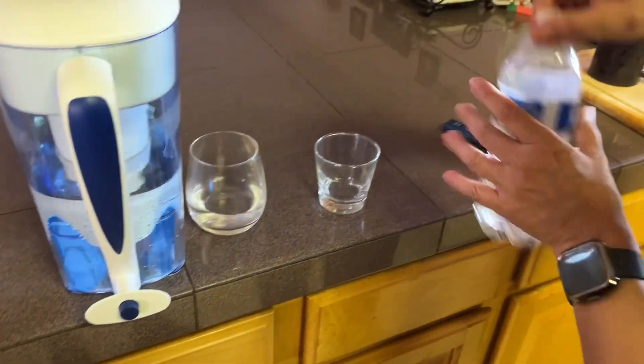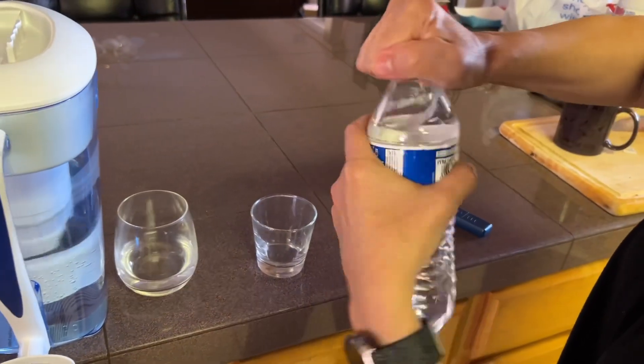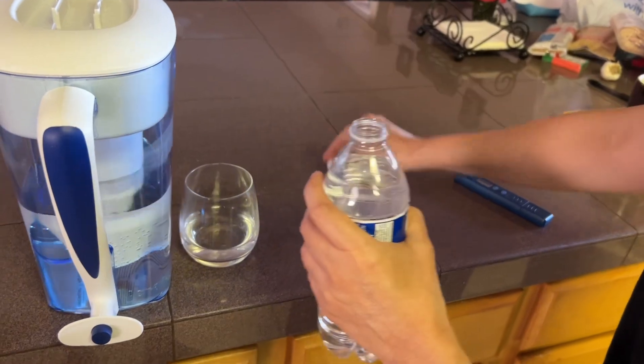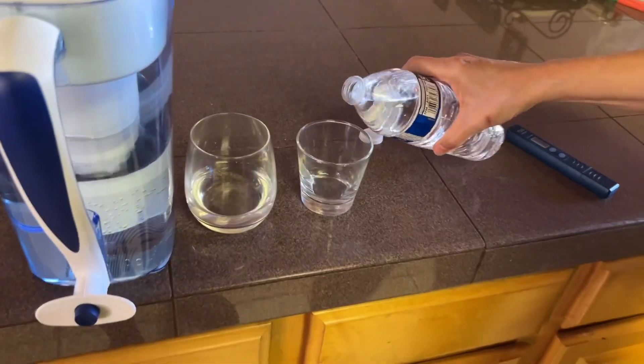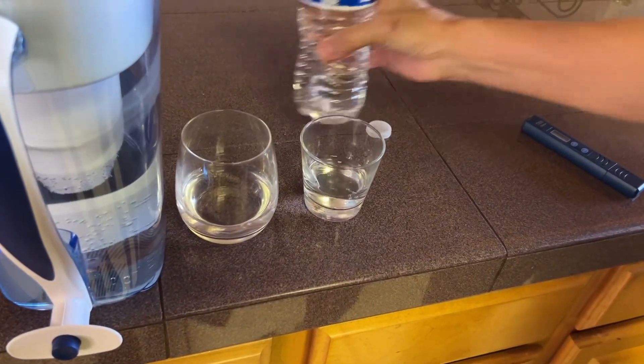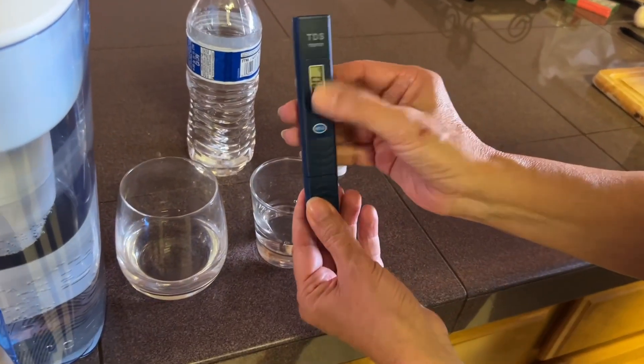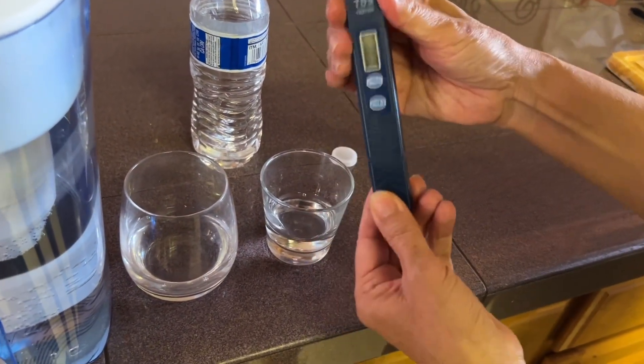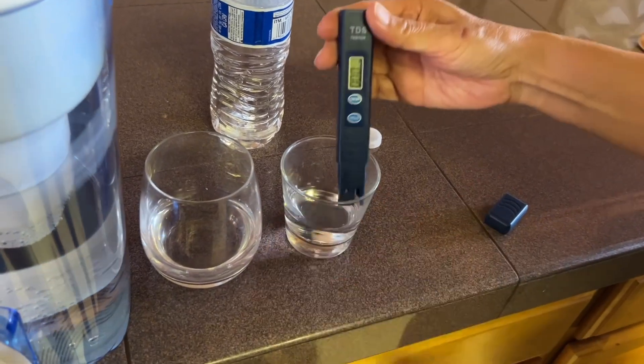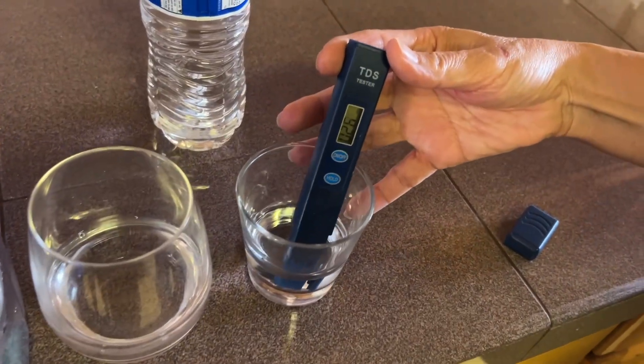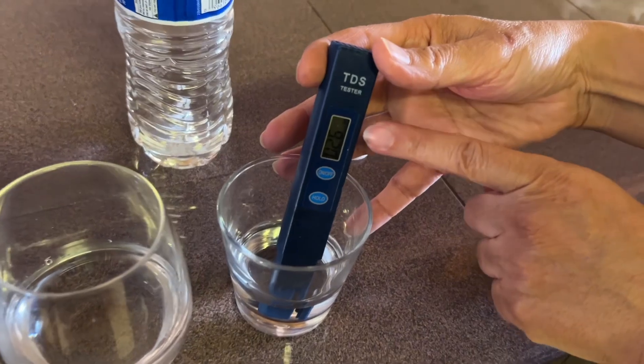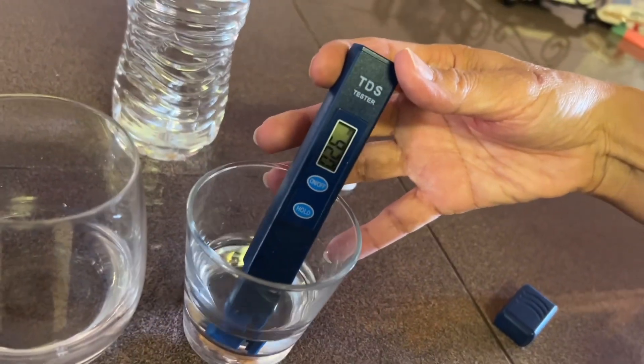You can see I'm opening it for the first time, so you know I didn't put another type of water in there. This is the meter that it comes with. Simply turn it on. We'll try the bottled water first. You can see the measurement is 26, which isn't bad.